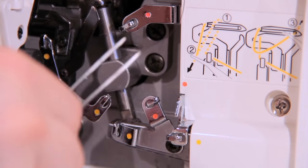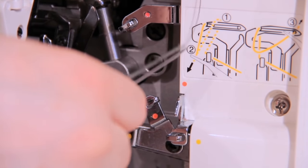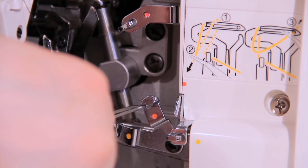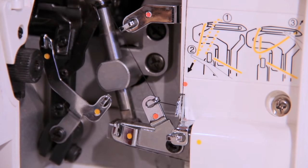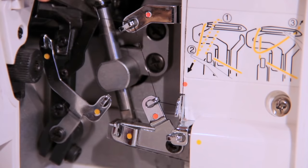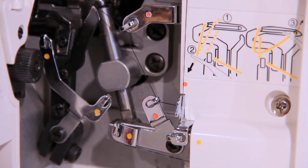Now we're just going to connect the red dots. So take your thread, it's the upper looper, first, second, third dot. Make sure that they are popped in there. Your thread will even make kind of like a little pop sound.